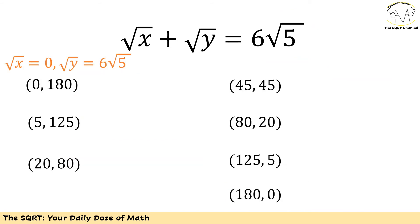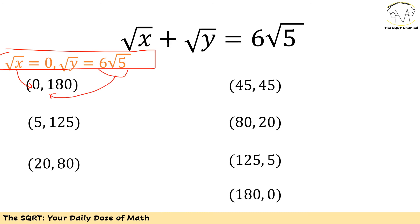Now we find the values for x and y. For the first case, radical x equals 0, so x equals 0, and radical y equals 6 square root of 5, so y equals 6 squared times 5, which is 180. Using the same approach for all cases, we can see that in total we have 7 different cases.